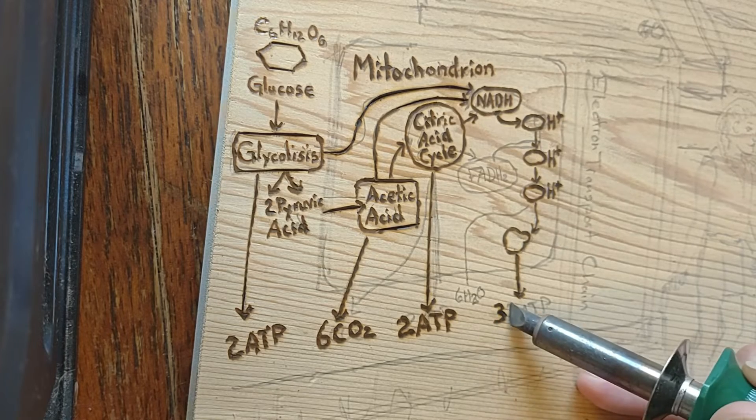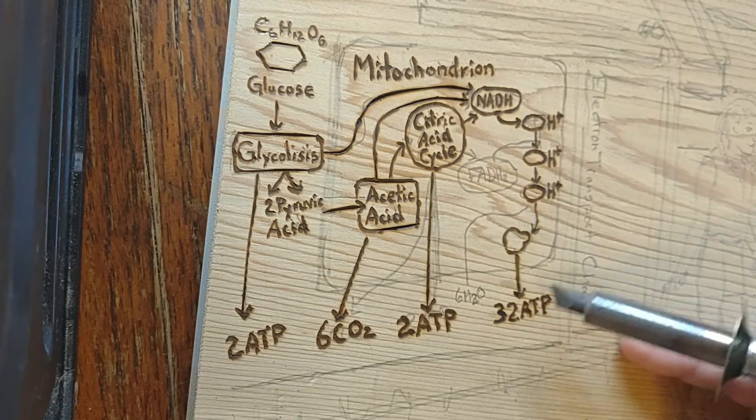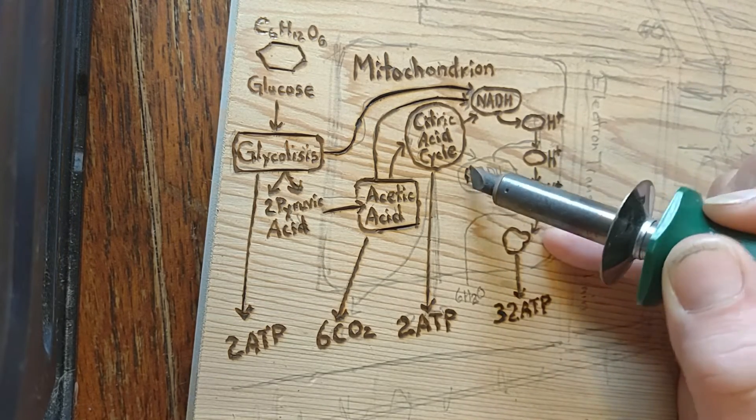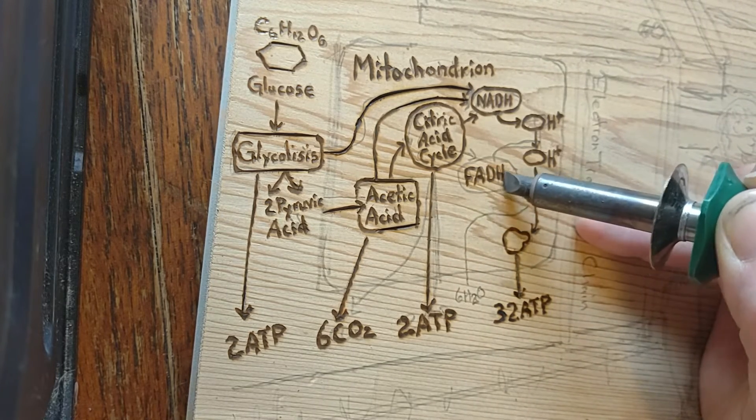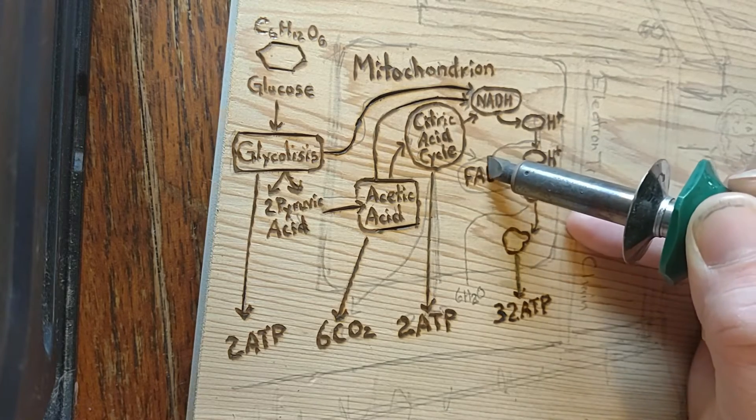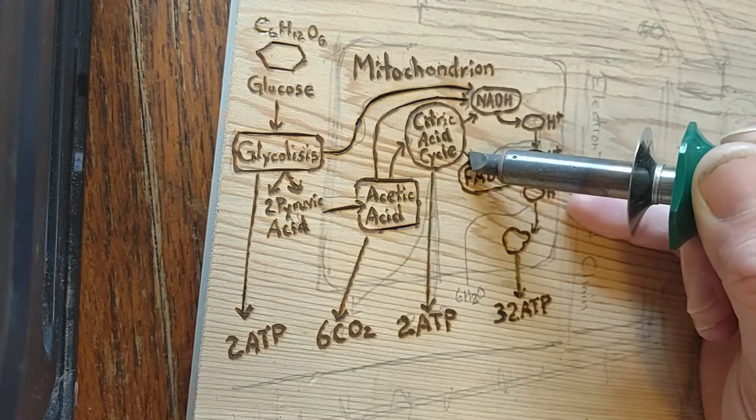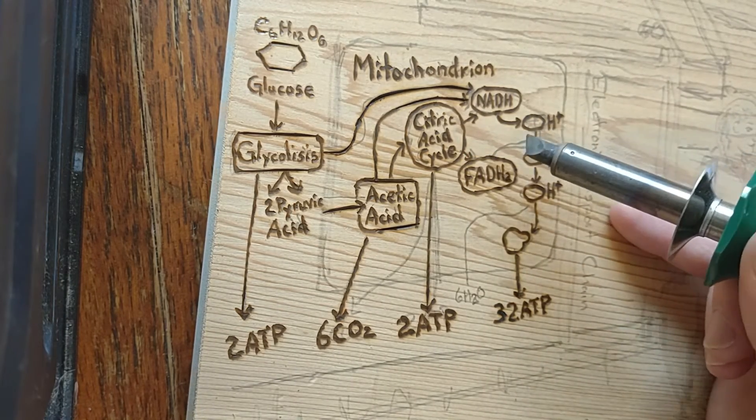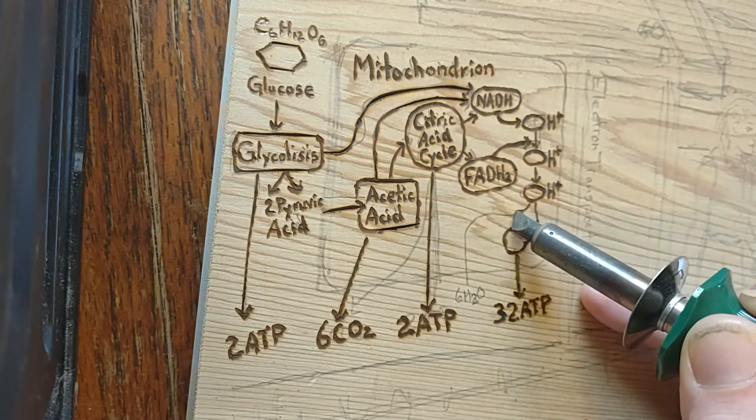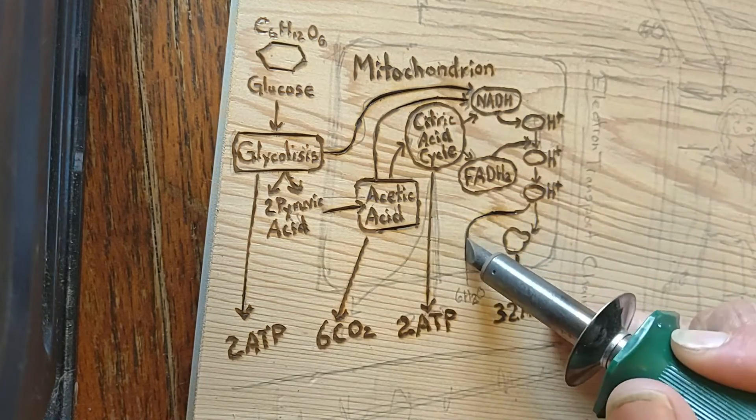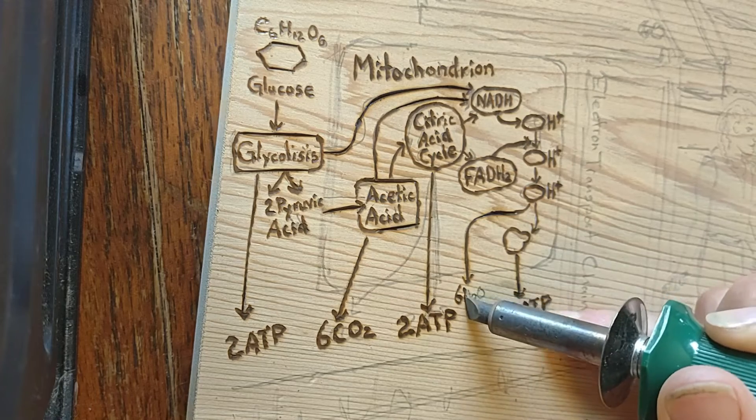During the cycle, acetyl-CoA, two carbons, plus oxaloacetate, four carbons, yields citrate, six carbons, which is rearranged to a more reactive form called isocitrate, six carbons. Isocitrate is modified to become alpha-ketoglutarate, five carbons, and a whole bunch of other things that we're not going to get into right now.